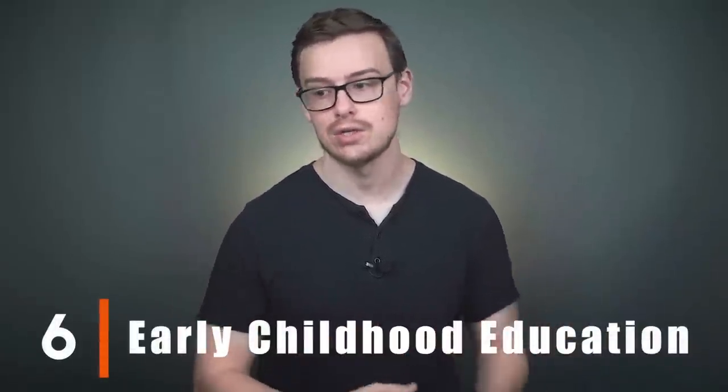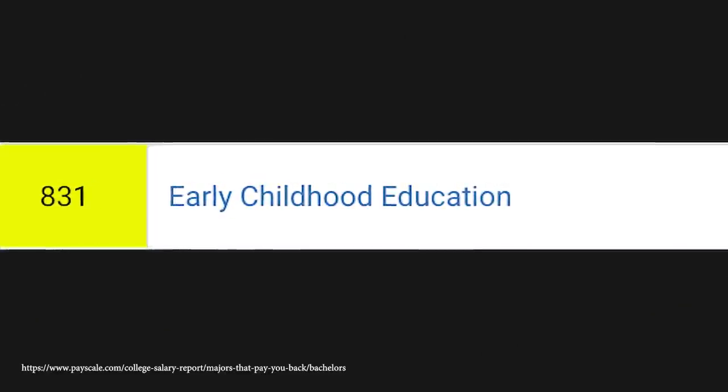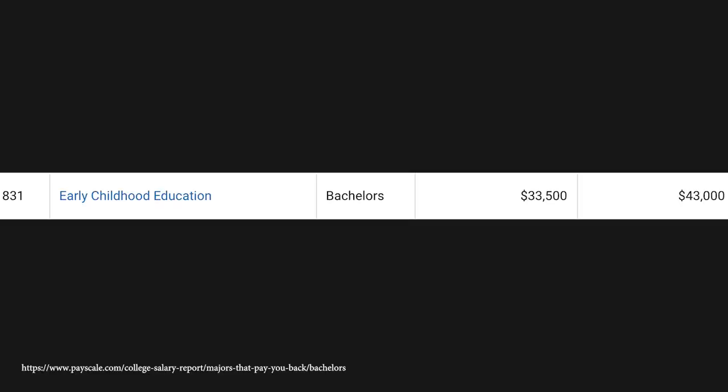Number six on the list is going to be early childhood education. You hear that? The Karens are coming to cancel me. So I felt bad about ranking this one low. I mean, technically it's the second worst on the entire list. It ranks 831 out of 835 possible degrees. That's really, really bad. Now I said I wasn't going to show the numbers, but just to give you guys some perspective here, they start off around $33,500 a year in the first five years, and then mid-career pay is going to be $43,000 a year. Now these numbers might be a little bit overinflated because again, this is survey data.